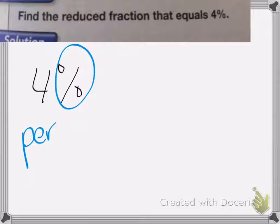And this next one says, find the reduced fraction that equals 4%, because we always try to reduce. So again, we have 4%. The percent means per hundred.